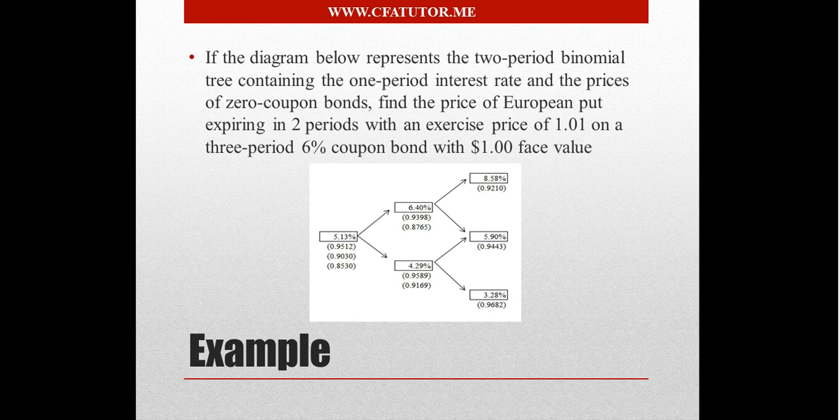If you go to the example here, we see we have a diagram that shows the interest rate tree for a 2-period, which means the bond has a maturity of 3 years. The diagram below represents the 2-period binomial tree, and we are trying to price the European put that's written on a bond that will expire in 2 periods with an exercise price of $1.01. The 3-period 6% coupon bond has $1 face value.